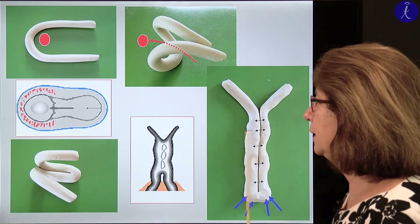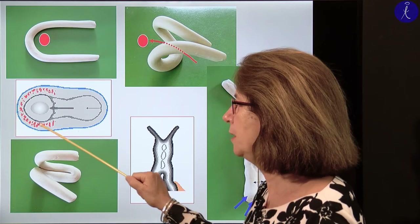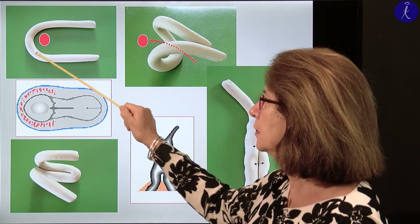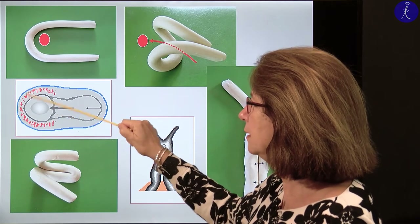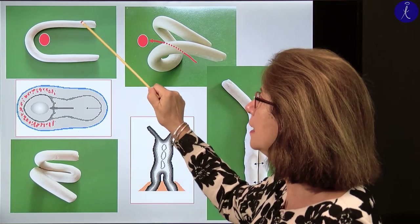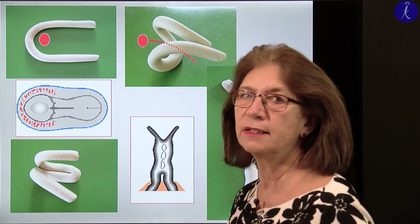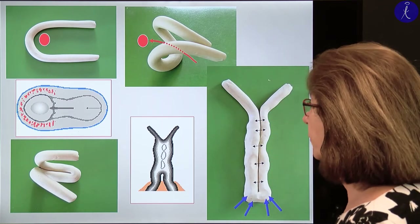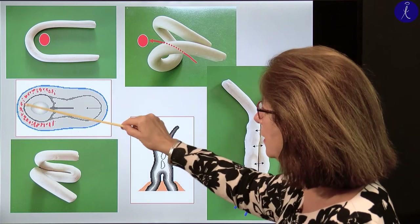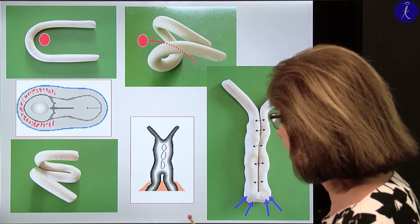Now imagine the trilaminar germ disc at the end of the third week when the heart primordium is forming. This is the forming heart tube — I model this with play-doh. The buccopharyngeal membrane is at approximately this level, and inside the embryo around the forming neural plate a tube is forming. Initially we have separated blood islands, but as they fuse they form the heart tube. As the folding happens, the buccopharyngeal membrane moves forward and this anterior territory bends under in a U-shape.